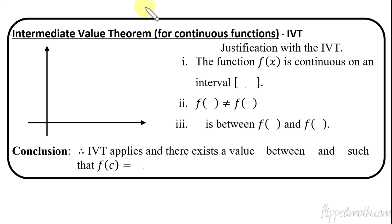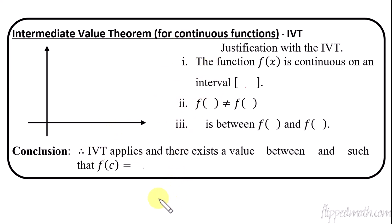The concept behind the Intermediate Value Theorem is super, super easy. In fact, it's almost like common sense — when you're done with this, you're like, yeah, duh. But the hard part is using three justifications. We have to use three things to justify that allows us to use the Intermediate Value Theorem, and then we have a little conclusion statement. Remembering those three justifications and how to write the conclusion statement — that's the hard part.